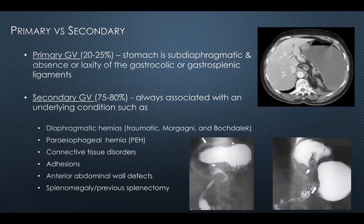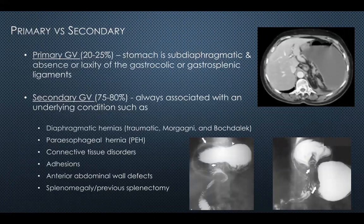Gastric volvulus can be divided into primary and secondary. We most commonly see secondary gastric volvulus, where there's an underlying associated condition such as a diaphragmatic hernia or paraesophageal hernia. Less commonly, we see primary gastric volvulus, which requires the stomach to be sub-diaphragmatic and is typically seen with an absence or laxity of the gastrocolic or gastrosplenic ligaments.